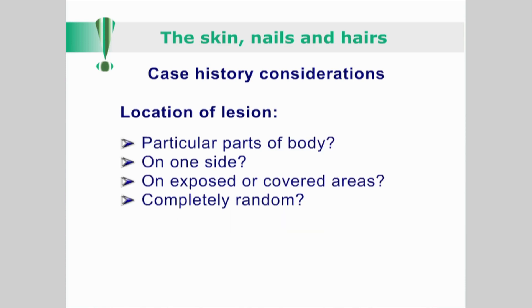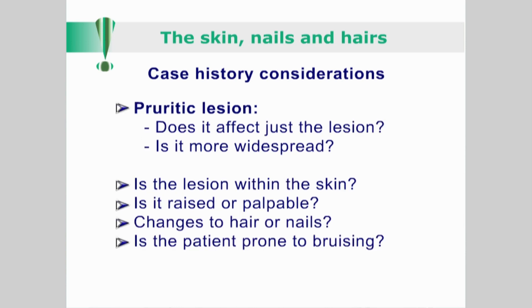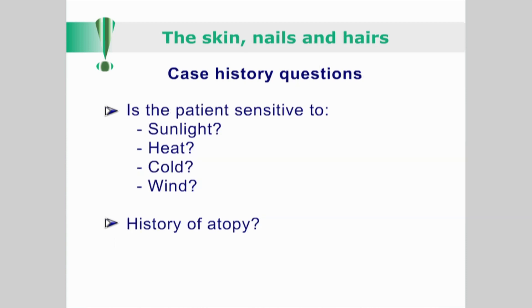Is the lesion confined to particular parts of the patient's body? On one side? On exposed or covered areas? Or is it completely random? If pruritus is present, does it affect just the lesion or is it more widespread? Is the lesion within the skin? Is it raised or palpable? Are there any changes to hair or nails? Is the patient prone to bruising? Is the affected area or the whole patient sensitive to sunlight, heat, cold or wind? Is there any history of atopy?